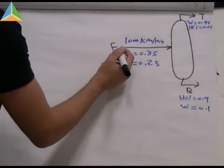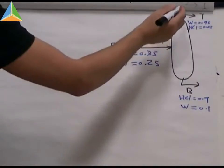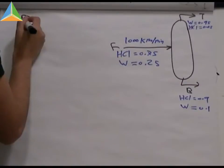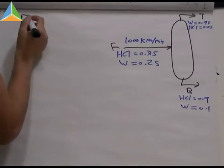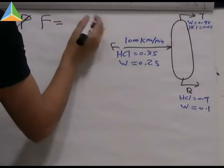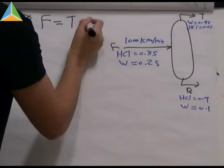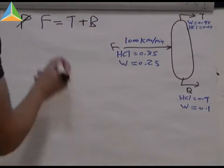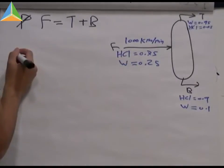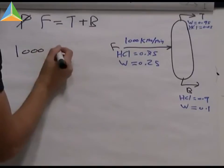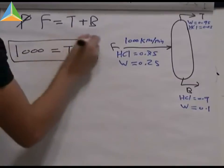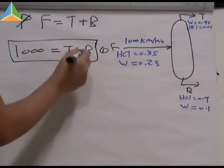So we know that the amount of feed equal to the amount of top stream and the amount of bottom stream. F equal to T plus B. We know the amount of F, which is the amount of feed. 1000 equals to T plus B. We got this equation number one.